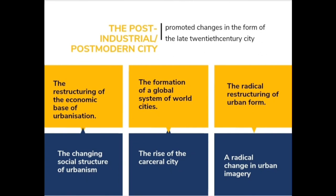Moving on to the post-industrial or post-modern cities: post-industrialism promoted changes in the form of the late 20th century city. SOJA has characterized these trends in terms of six geographies of restructuring. First, the restructuring of the economic base of urbanization, involving fundamental change in the organization and technology of industrial production and the attendant social and spatial division of labor. Second, the formation of the global system of world cities, expanding both the outreach of particular world cities and their in-reach. Further characteristics include the changing social structure of urbanism, the rise of the carceral city, and a radical change in urban imagery.